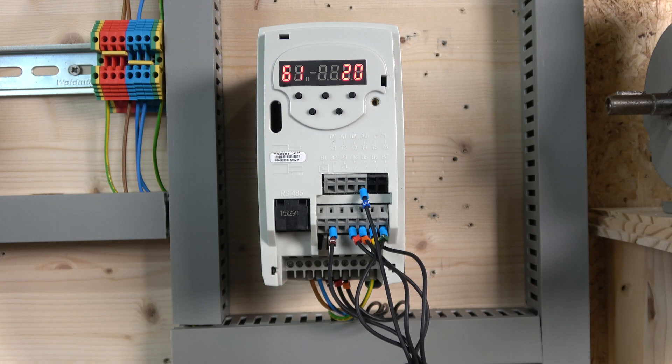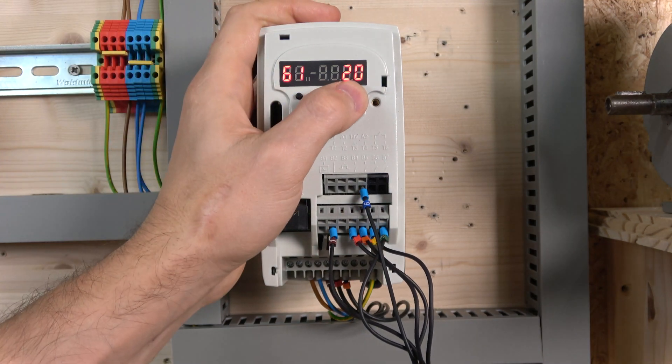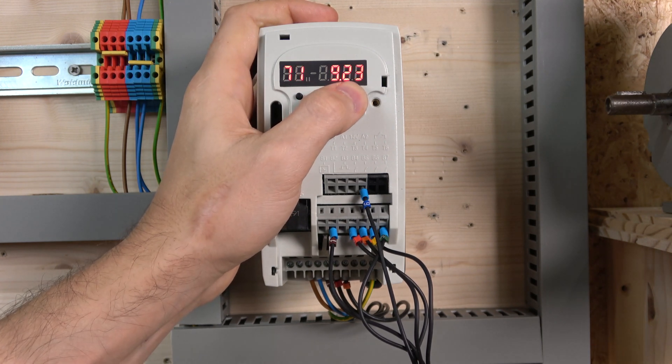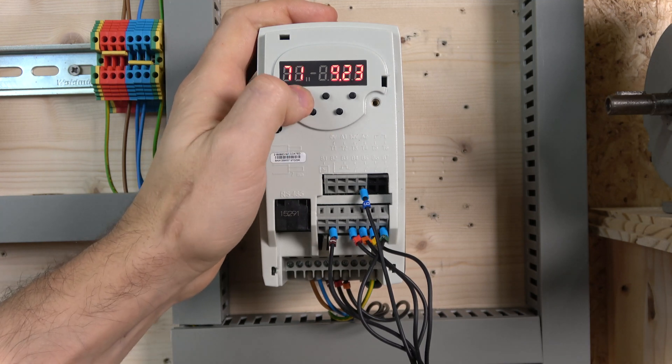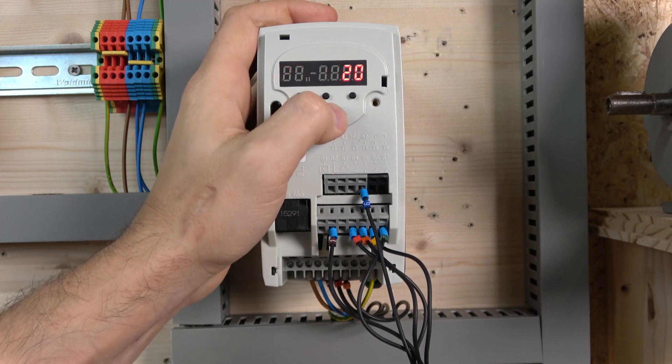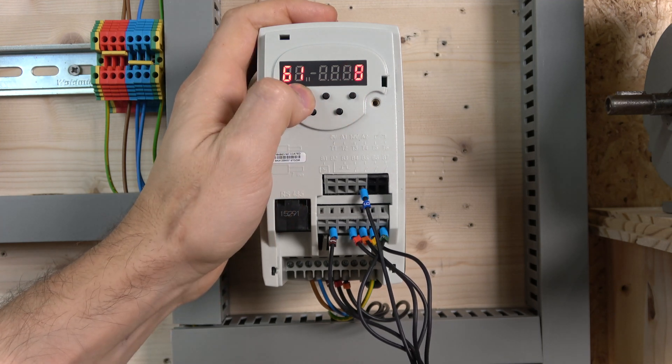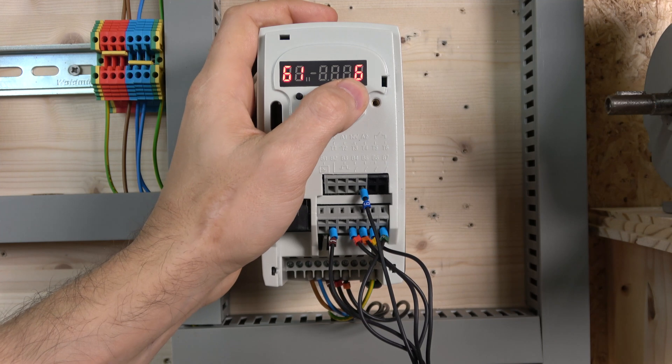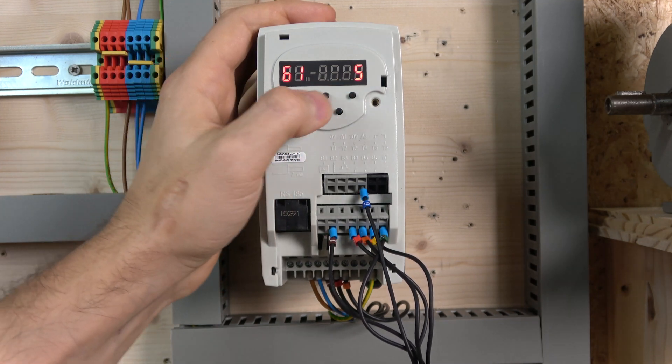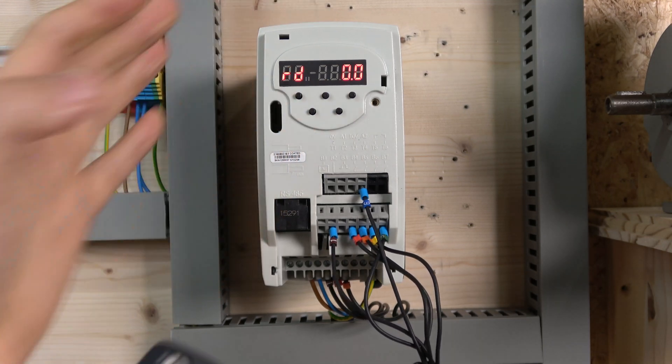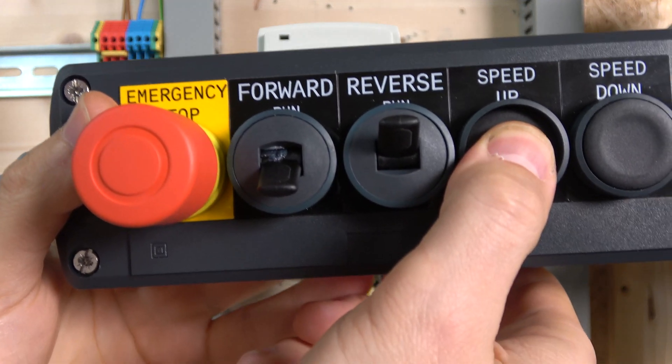What we're going to do is change parameter 61. You can double check which parameter was assigned, so it's 61. We're going to change that one down, let's say to 5, and see how sensitive the buttons are now.